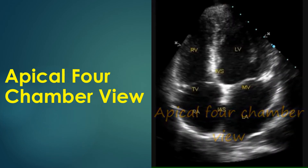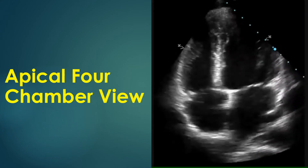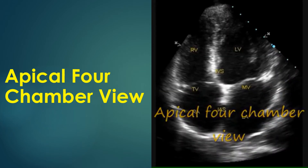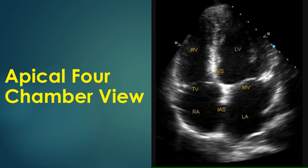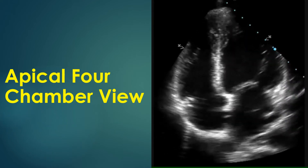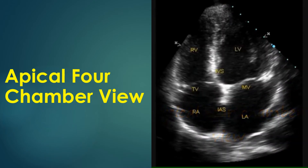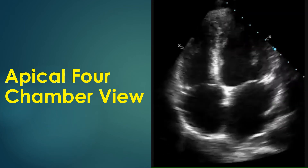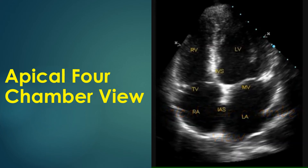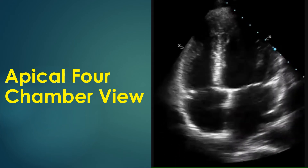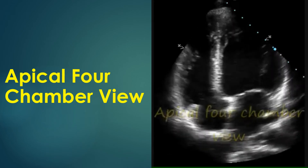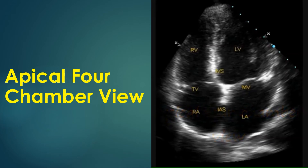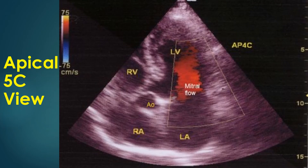Dropouts in the inter-atrial septum are common in this view without any atrial septal defect. This is because the ultrasound beam is parallel to the inter-atrial septum, and the thin region at the fossa ovalis is often seen as an echo dropout. A subcostal view should be obtained to image the inter-atrial septum before concluding that the dropout is an atrial septal defect. A good left-to-right flow demonstrated by color Doppler can also be used to confirm the presence of an atrial septal defect, especially if the subcostal view is suboptimal in some adults.